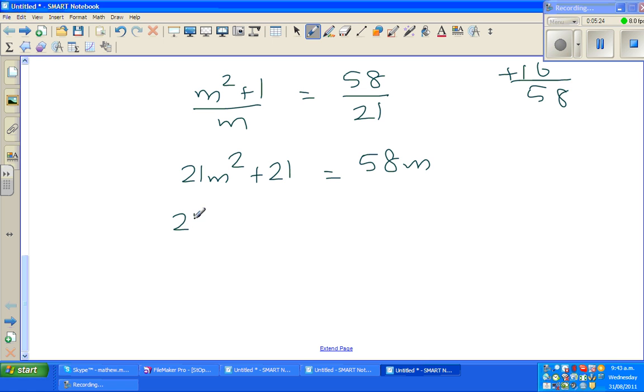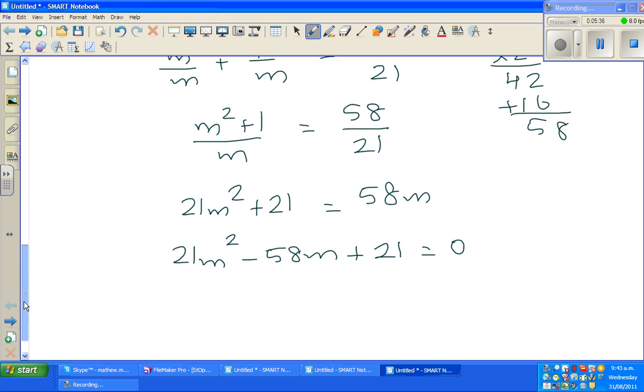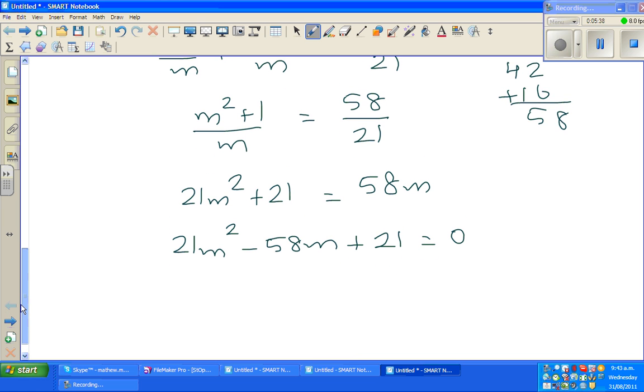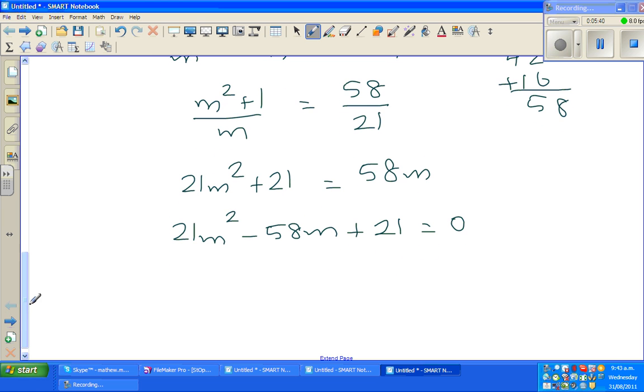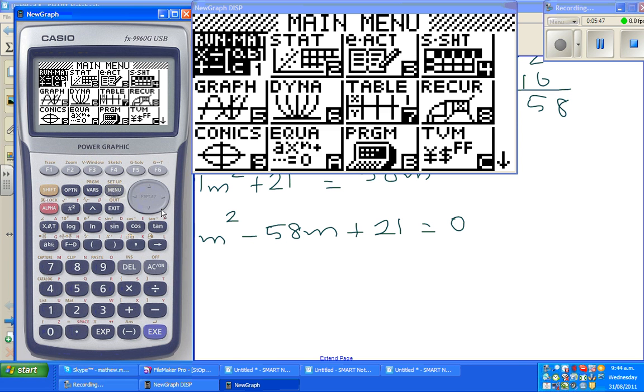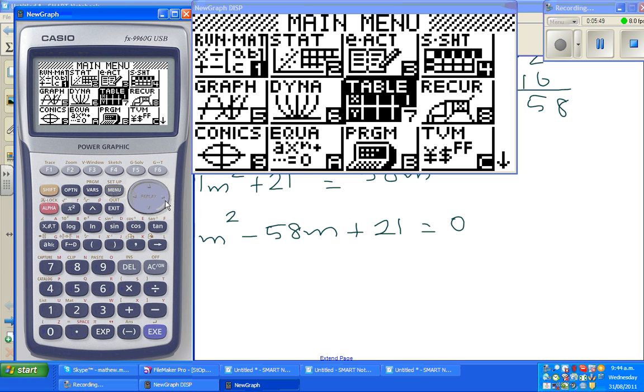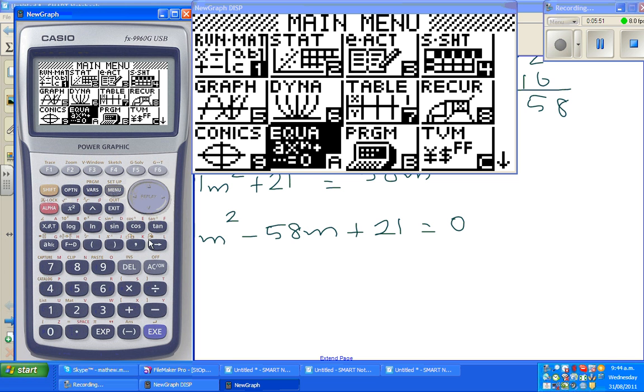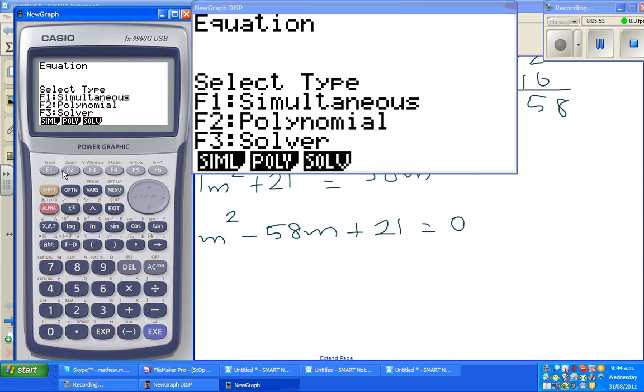Now this becomes 21m squared minus 58m plus 21 is equal to 0. So this has become a quadratic expression. Now I'm going to use a calculator. Go to polynomial, so let me get my calculator out, menu, go to your equation menu.